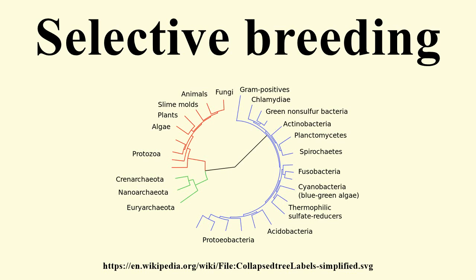There are two approaches or types of artificial selection, or selective breeding. First is the traditional breeder's approach, in which the breeder or experimenter applies a known amount of selection to a single phenotypic trait, by examining the chosen trait and choosing to breed only those that exhibit higher or extreme values of that trait.